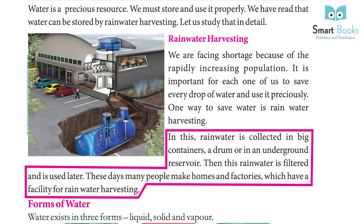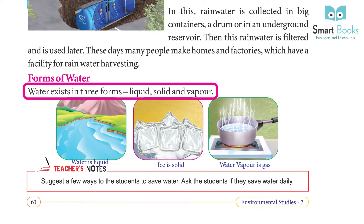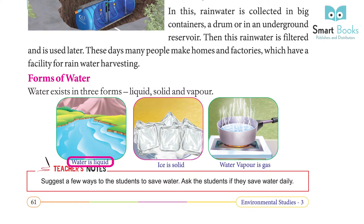This rainwater is filtered and used later. These days, many people build homes and factories with a facility for rainwater harvesting. Forms of water: water exists in three forms — liquid, solid, and vapor. Water is liquid, ice is solid, and water vapor is gas.